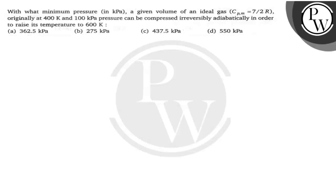Hello guys, question mei diya hai: With what minimum pressure can a given volume of an ideal gas having Cp = 7/2R, originally at 400 Kelvin and 100 kilopascal pressure, be compressed irreversibly and adiabatically in order to raise its temperature to 600 Kelvin?